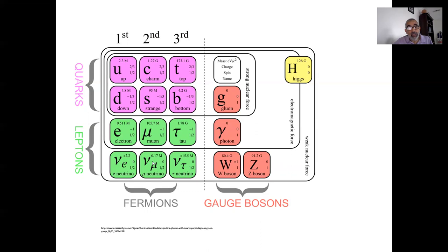There's also a muon neutrino. So it turns out there's a second generation of quarks and leptons made up of the charm quark, strange quark, the muon, and the muon neutrino.